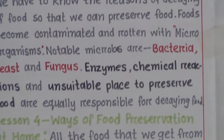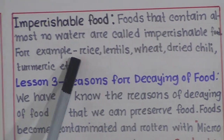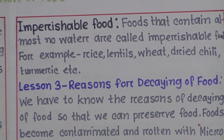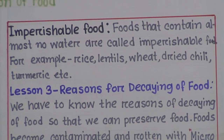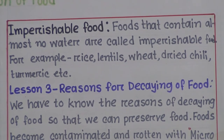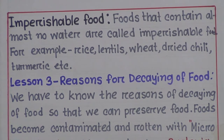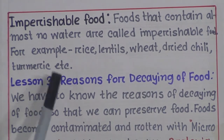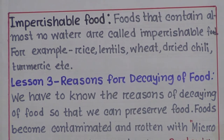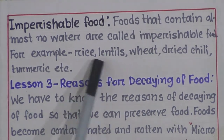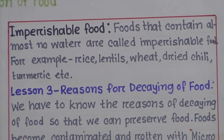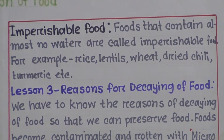Foods that contain almost no water are called imperishable food. More water means perishable, less water means less perishable, and almost no water means imperishable. Examples include rice, lentils, wheat, dried chili, turmeric, etc. We can easily preserve these by drying them under the sun.